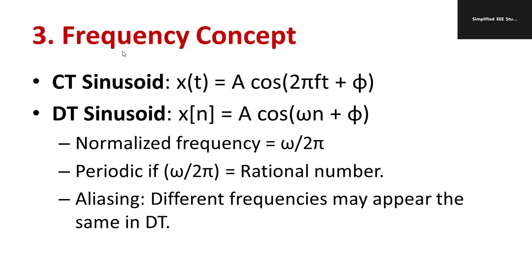For the frequency concept, a continuous time sinusoidal signal is x(t) = A·cos(2πft + φ), and a discrete time sinusoidal signal is x(n) = A·cos(ωn + φ). The normalized frequency is ω/(2π). A discrete time sinusoidal is periodic if ω/(2π) is a rational number. Aliasing refers to the effect where different frequencies may not appear distinctly in the same discrete signal.